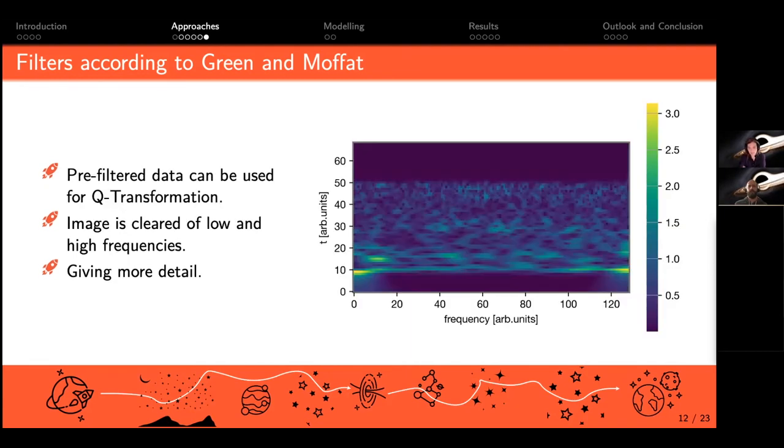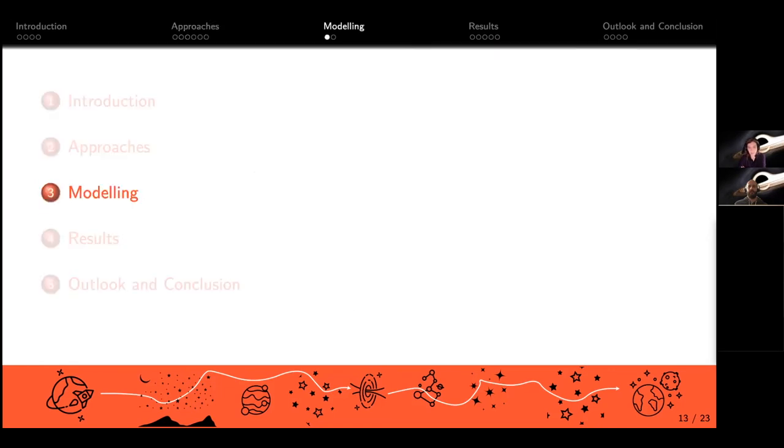We could use that anyway and pre-filter our other approaches with it. As you can see, we did it on the Q-transformation. Since we cut out the low and high frequencies, the image is cleared now and shows us more detail. Now we're coming to our modeling.